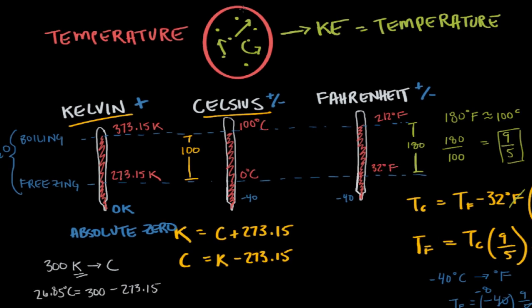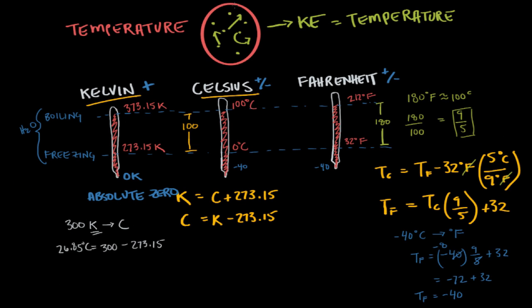In a future video I'll show why absolute zero occurs at negative 273.15 degrees Celsius, which will come up when discussing Charles's Law.